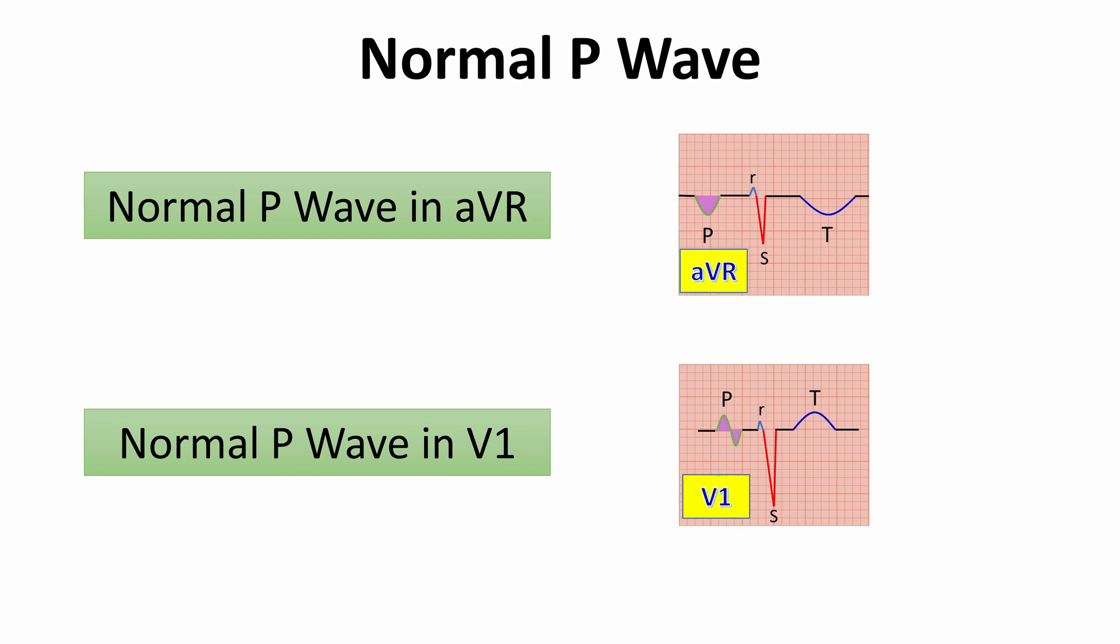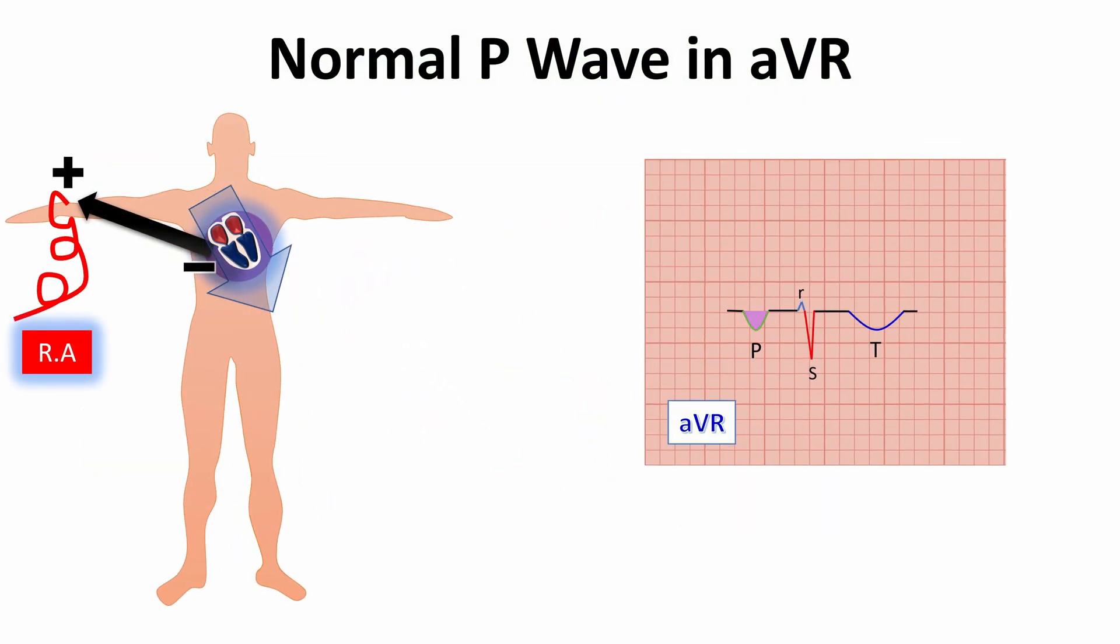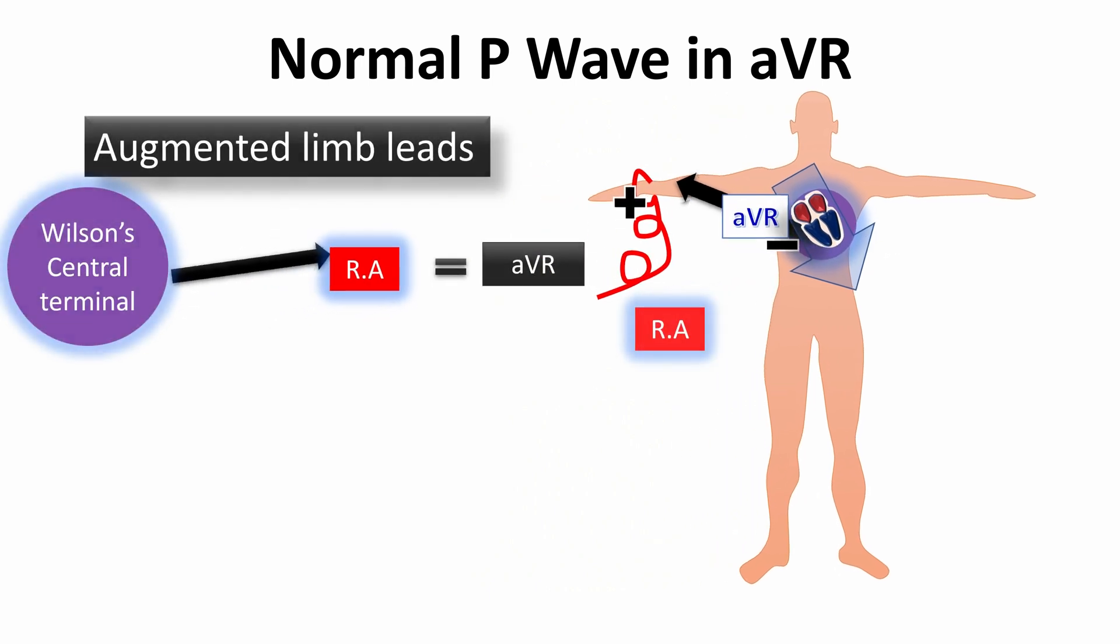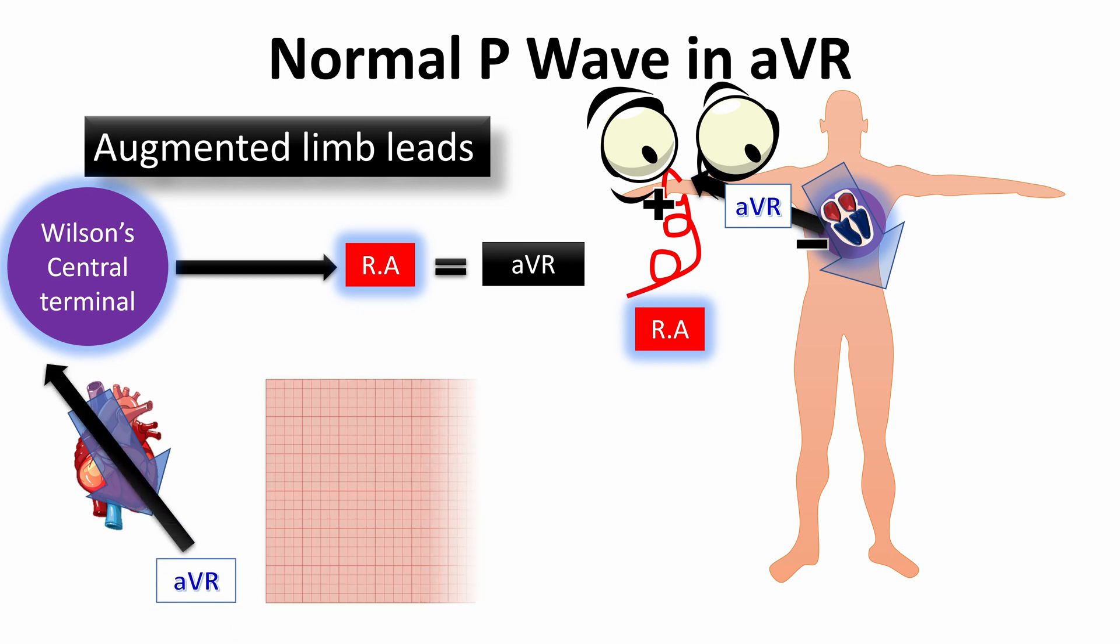Why is the P wave in these two leads not positive? In lead AVR, it is inverted along with inversion of the QRS complex and the T wave, since the direction of atrial activation is away from this lead. As this lead looks to the heart from the right upper limb, it has two electrodes: the positive one located in the right arm, and the negative one located in the center of Eindhoven Triangle, at the Wilson's central terminal point. So, as the atrial activation is away from this lead, it draws the P wave as a negative wave.